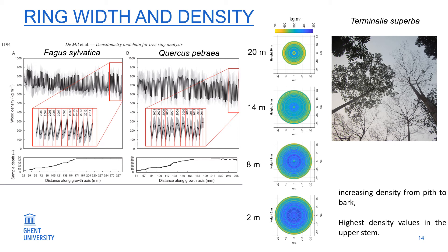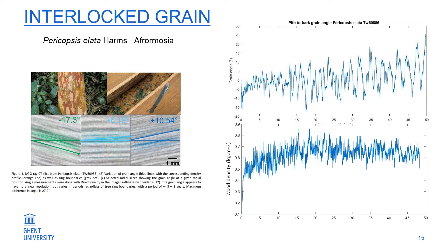With higher densities in the upper crown. Then there's the aspect of interlock grain on Pericopsis alata. It's from Mozambique—a tree with very nice wood. Here we show its pith to bark variation in grain angle.